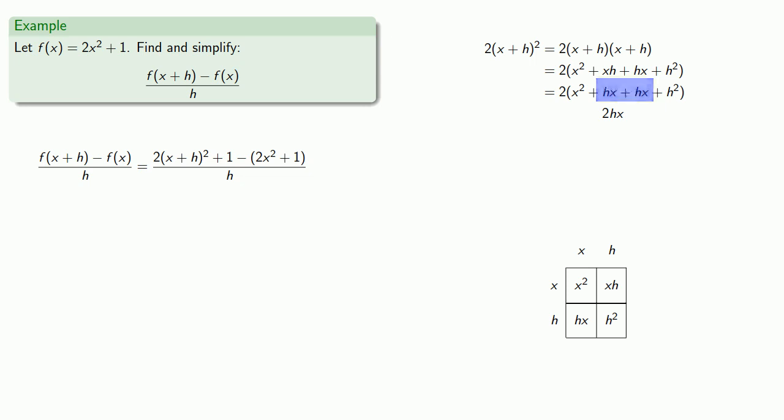These become 2hx, and algebra is generalized arithmetic, and arithmetic is bookkeeping. We had an x². We still have an x². We had an h². We still have an h². We had a 2. We still have a 2.